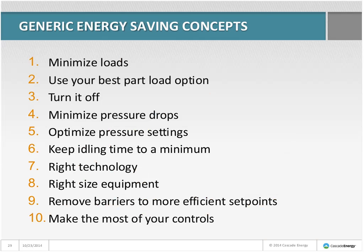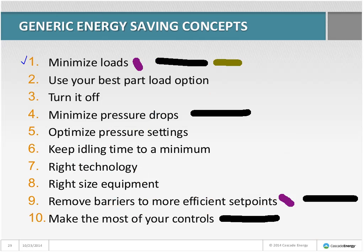With the textile plant, what did these guys do? Minimize loads — the leak load was a real big hitter. In this case the flow controller wasn't benefiting them, so removing it and letting the variable-speed compressor control the pressure saved energy and allowed them to optimize pressure settings. Those were the key concepts in play.